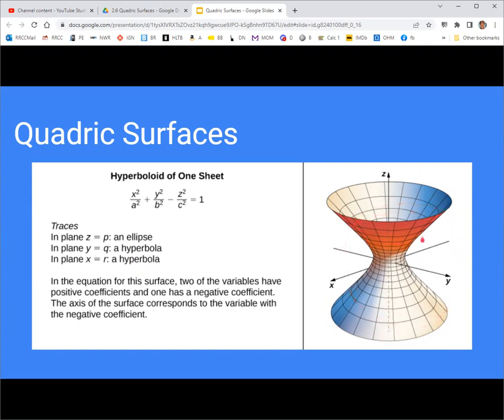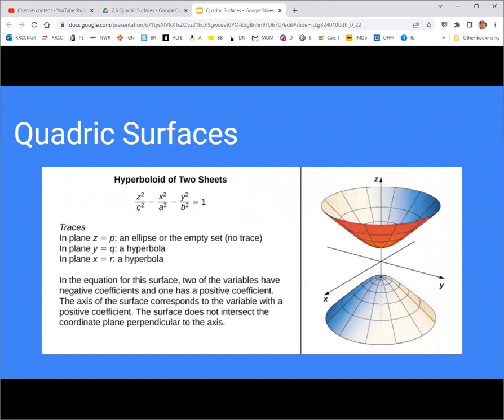Notice it is one continuous sheet, which allows you to differentiate it from a hyperboloid of two sheets, where there are two separate pieces. You see the difference here in the equation is that two of these are negative. It doesn't have to be the z one that's positive, but if the z one is the different sign of the other two, then that's going to be your axis of rotation. You have very similar traces here, except a trace in the middle would be an empty set because it wouldn't intersect at all.